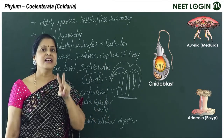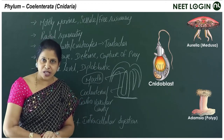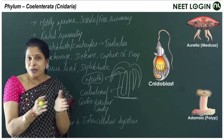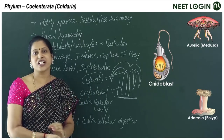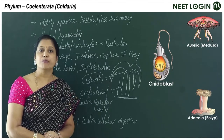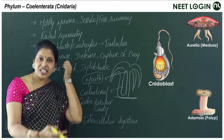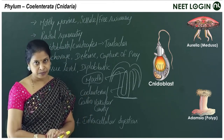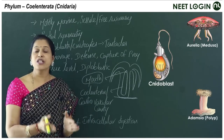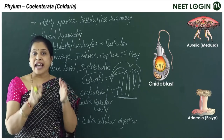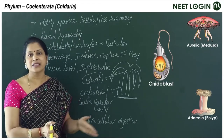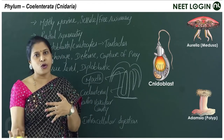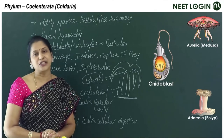They are diploblastic organisms with tissue level of organization and radial symmetry — any plane through the center gives identical halves. Because tissues appear for the first time in these animals, they are called the first eumetazoans or true eumetazoans.